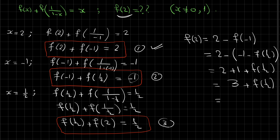Now using the third equation, f(1/2) = 1/2 - f(2). So replacing f(1/2) here: f(2) = 3 + (1/2 - f(2)), which gives f(2) = 3 + 1/2 - f(2).